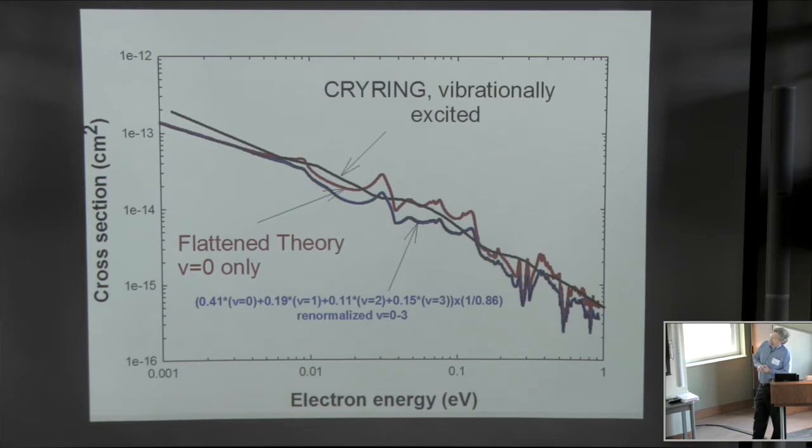But the cry ring experiment acknowledged that they had vibrationally excited N2+, but they did not know the vibrational distribution. What they did know was for each vibrational level, they were able to assess at zero eV electron energy only, the product of the rate coefficient from a particular level multiplied by the population of that level. With my calculated rate coefficients for each level, I was able to go back and calculate what their populations were in their beam. They had roughly 41% of the ions in v=0, 19% in v=1, 11% in v=2, and 15% in v=3. Surprisingly, they didn't see any v=4.